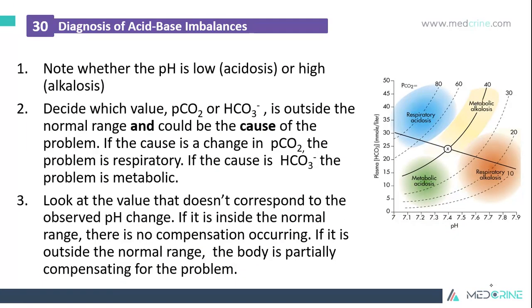In diagnosing acid-base imbalances, first note whether the pH is low (acidosis) or high (alkalosis). Then decide which value is outside the normal range and could be the cause of the problem. If the cause is a change in carbon dioxide pressure, the problem is respiratory; if the cause is a change in bicarbonate ions, the problem is metabolic. Finally, look at the value that does not correspond to the observed pH change — if it is inside the normal range, there is no compensation occurring; if it is outside the normal range, the body is partially compensating for the problem.